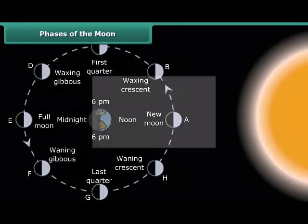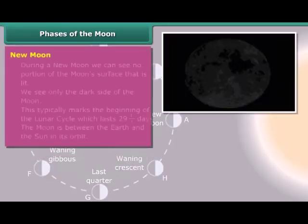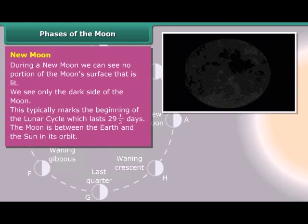New Moon: During a new moon, we can see no portion of the Moon's surface that is lit. We see only the dark side of the Moon. This typically marks the beginning of the lunar cycle, which lasts 29.5 days. The Moon is between the Earth and the Sun in its orbit.